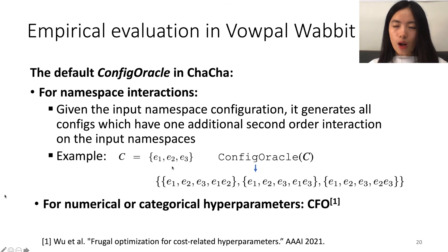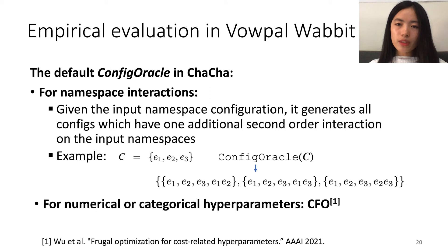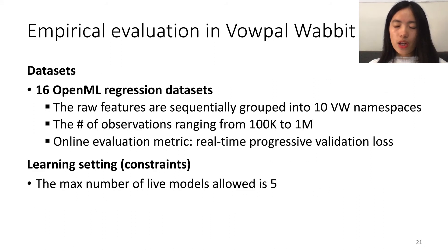it generates all configurations which have one additional second-order interaction based on the input namespace interaction. For the numerical hyperparameter, we use an existing hyperparameter optimization method called CFO to do the hyperparameter suggestion. We performed the evaluation on 15 OpenML regression datasets, on which we grouped the features into 10 namespaces, and the maximum number of live models allowed is 5.